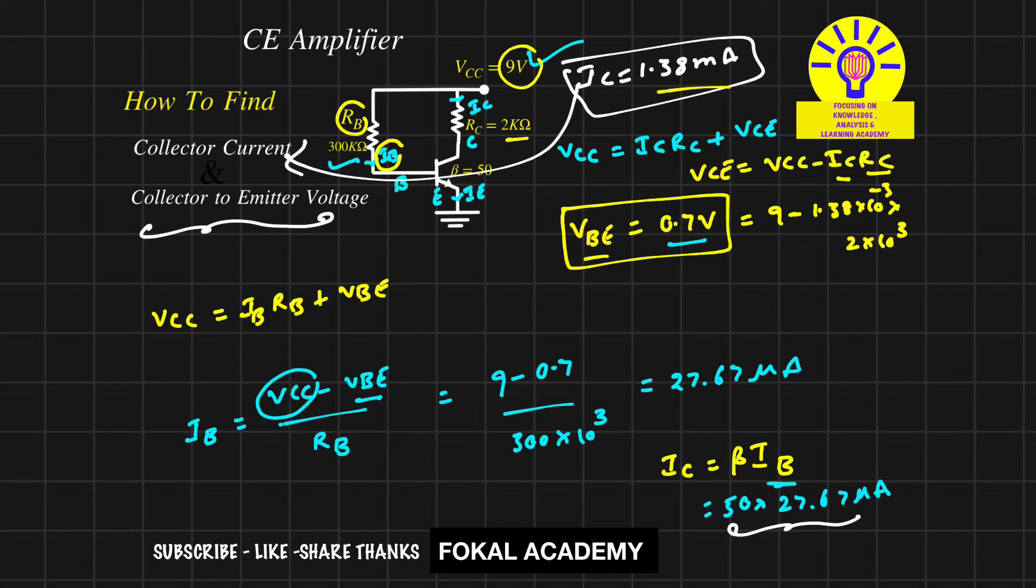So this is the collector current, and this is the voltage drop between collector to emitter. These are the two required values for the given problem. This is the process of solving this circuit. Thanks for watching, please subscribe, like, and share.